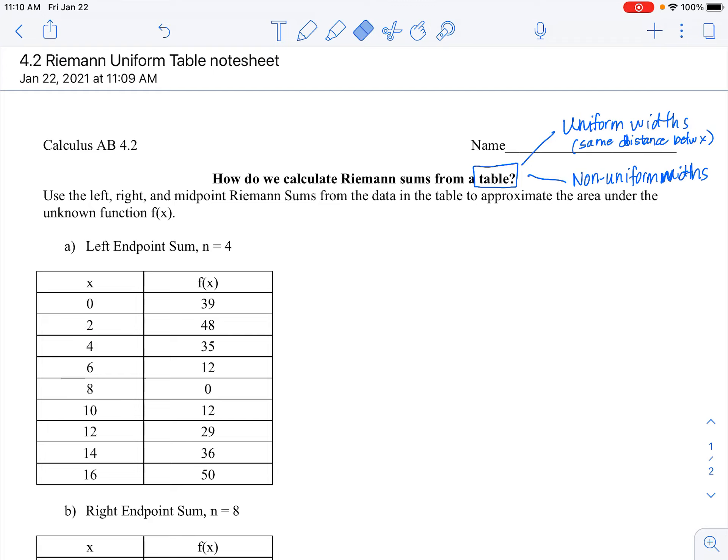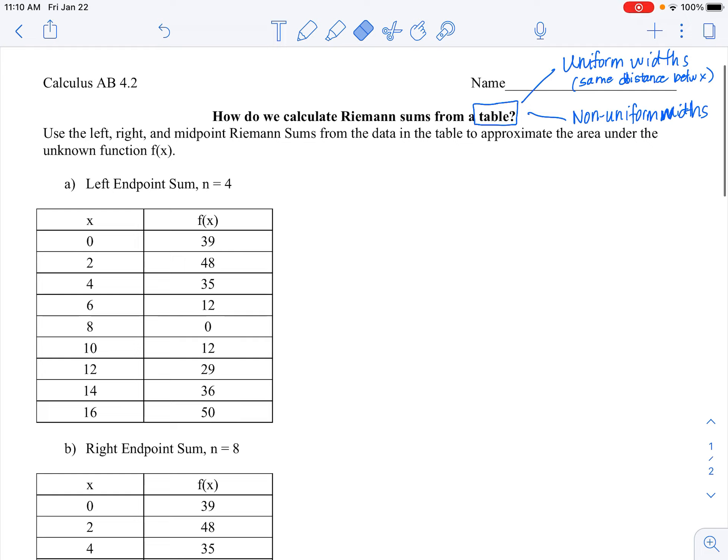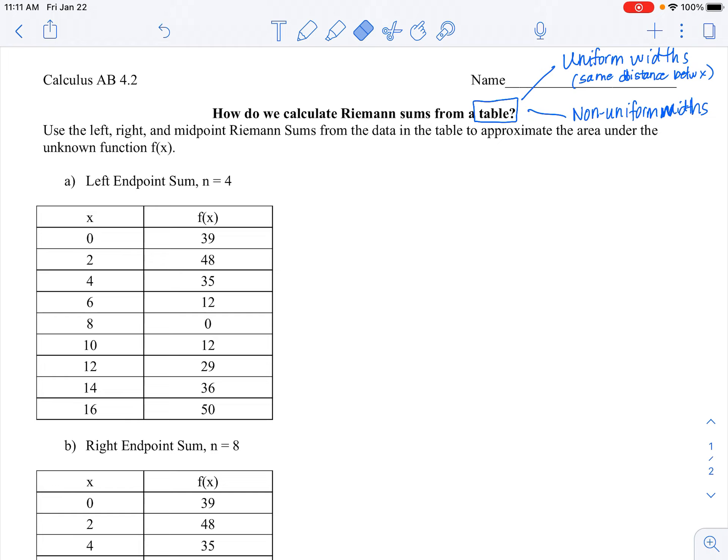If we look at the directions, it says use the left, right, and midpoint Riemann sums from the data in the table to approximate the area under the unknown function f(x). So what we're doing is we're making an approximation for the definite integral from 0 to 16 of f(x) dx. The reason I know that is because the beginning X is 0 and the last X is 16.